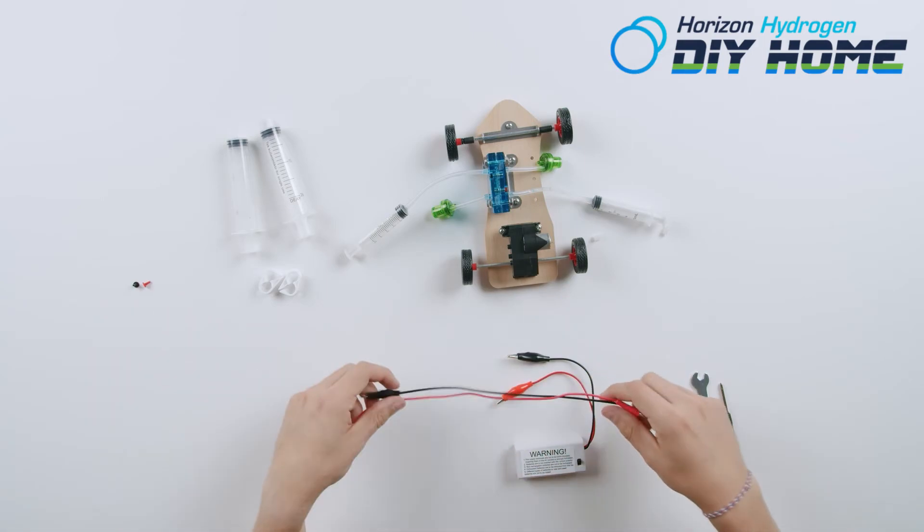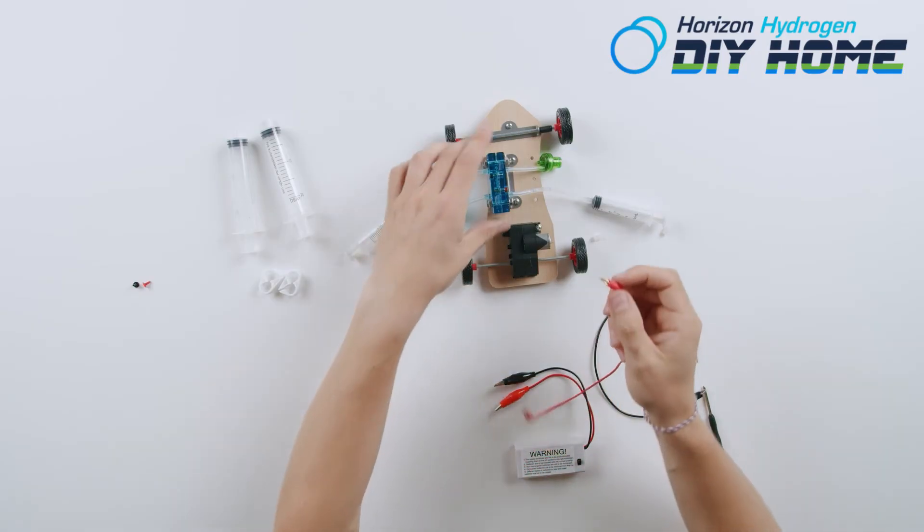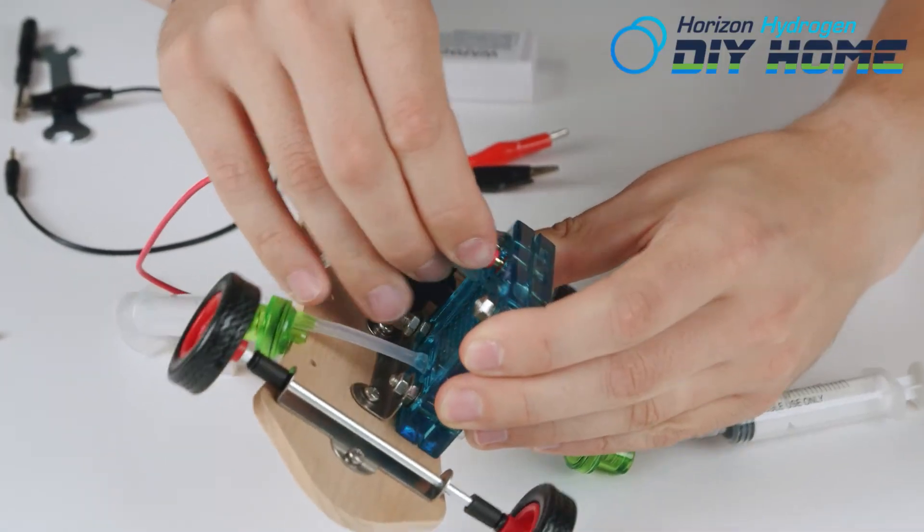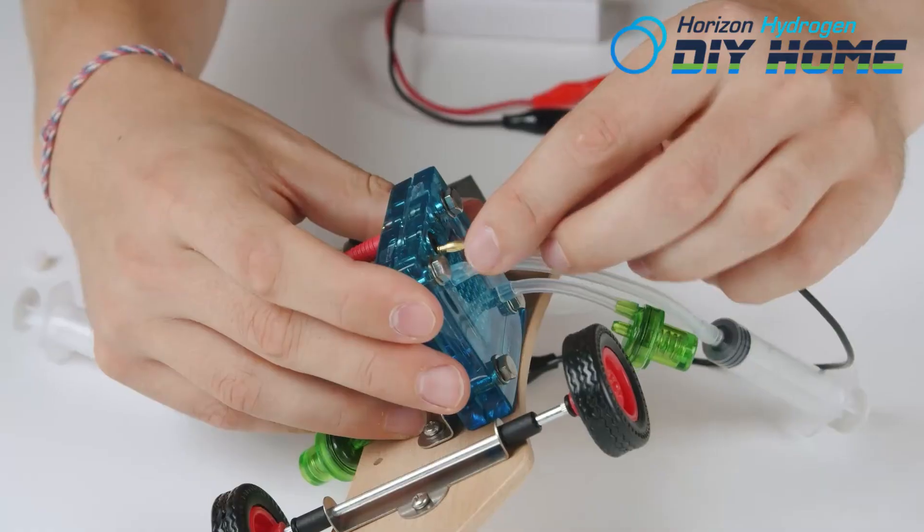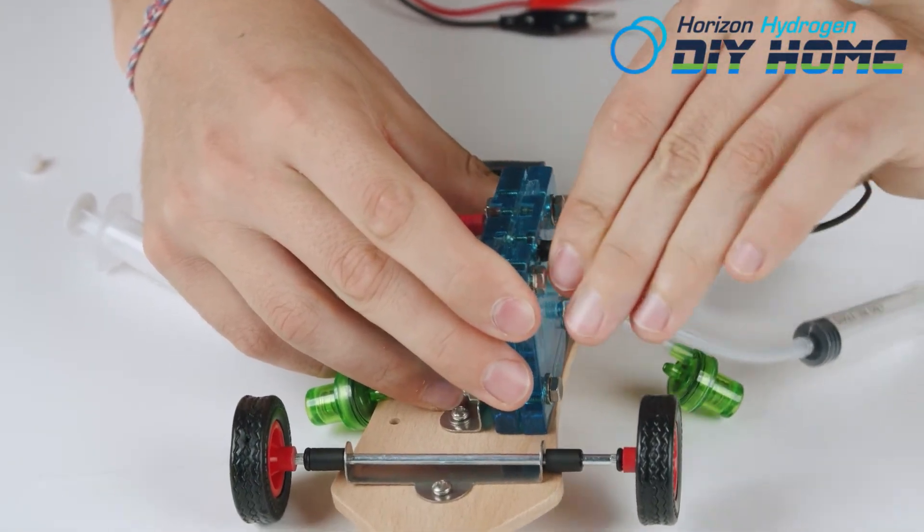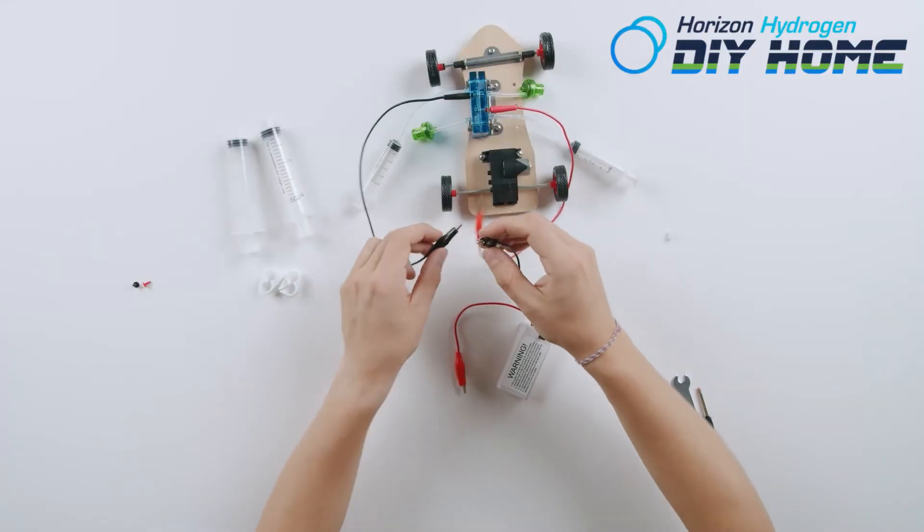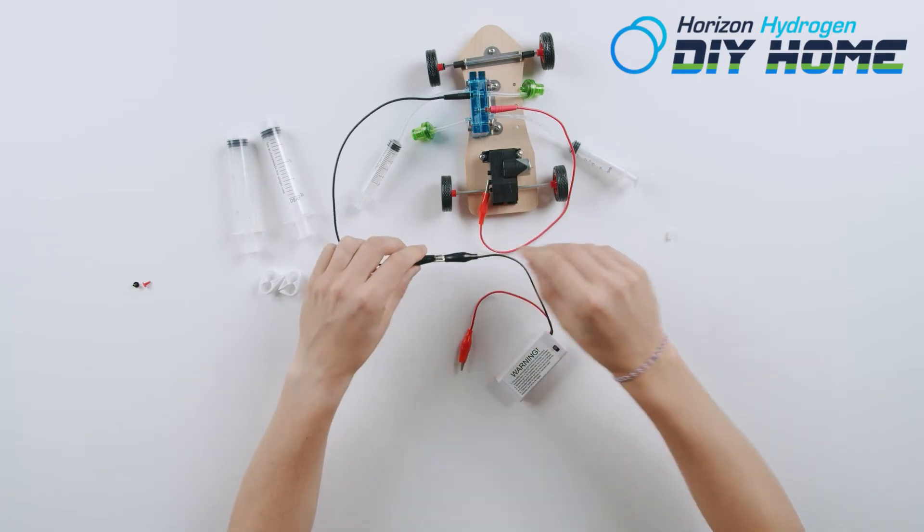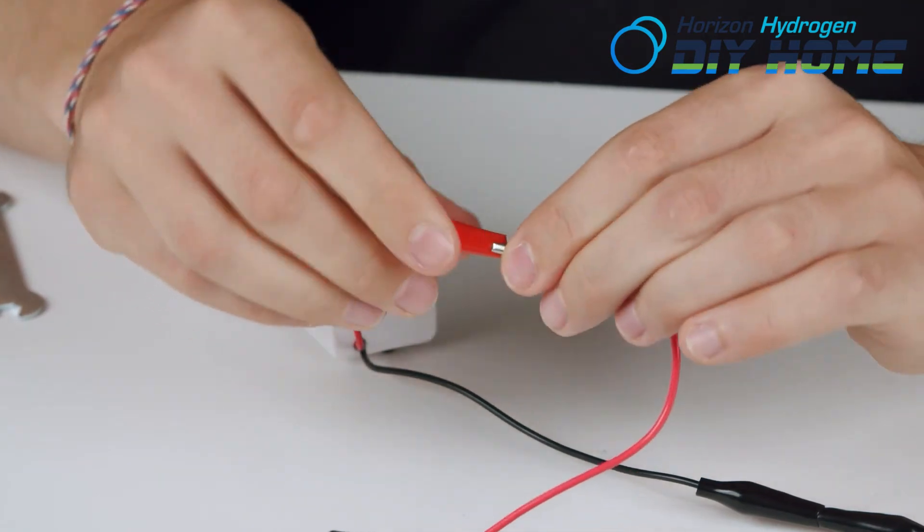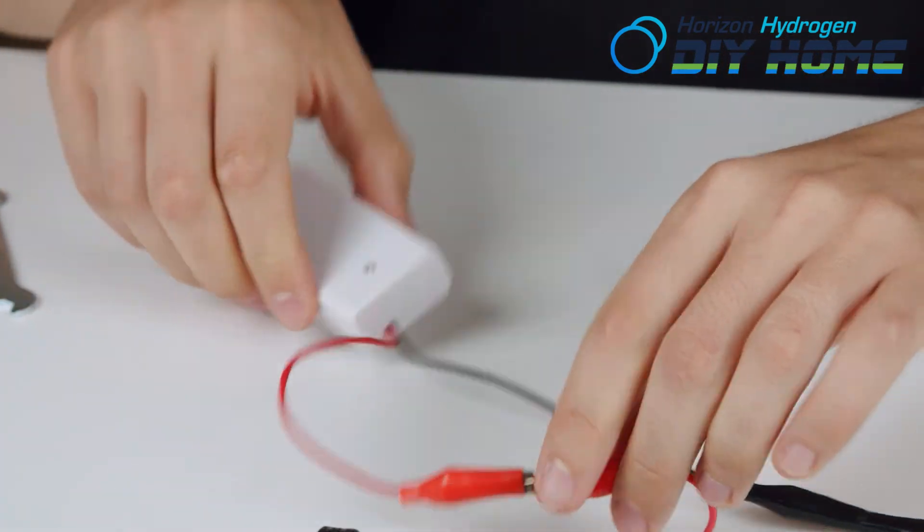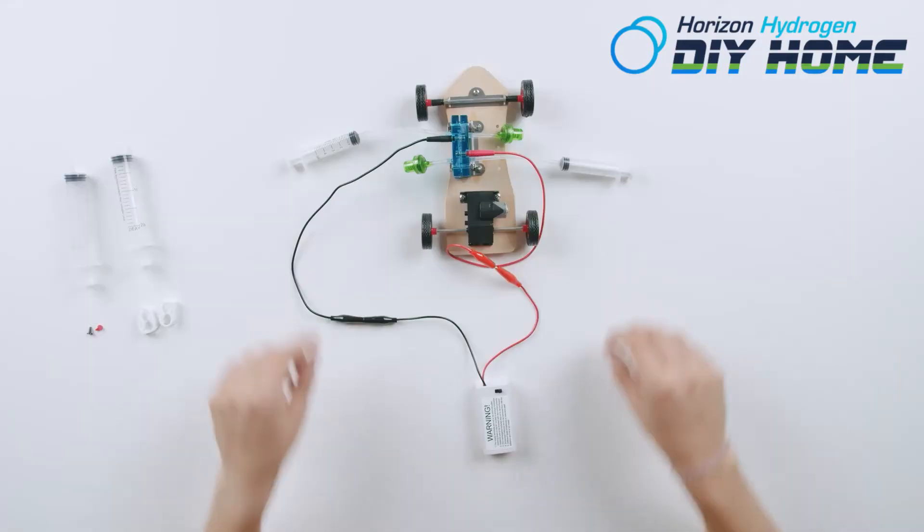Plug in red and black wire sets to the fuel cell. Install two AA batteries into battery pack. Batteries not included. Clamp battery wires to red and black wire sets. Turn on battery pack. Now the electrolysis will begin.